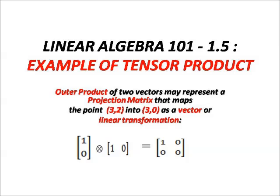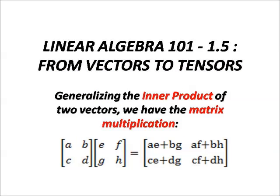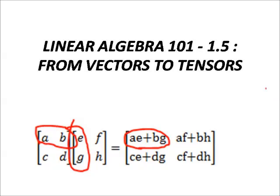We can also do other vector products to form other vectors. Here's the idea of matrix multiplication: [a, b; c, d] times [e, f; g, h] becomes [ae + bg, af + bh; ce + dg, cf + dh]. This is an extension of the inner product of two vectors.